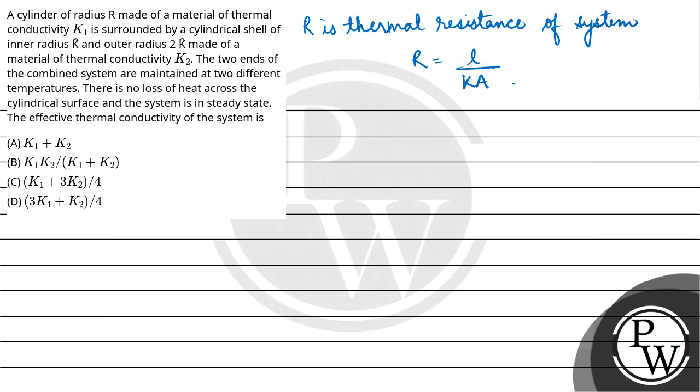Using the relation 1 upon R is equal to 1 upon R1 plus 1 upon R2, we get 1 upon L upon KA is equal to 1 upon L1 upon K1 A1 plus 1 upon L2 upon K2 A2. This gives KA upon L is equal to K1 A1 upon L1 plus K2 A2 upon L2. So KA is equal to K1 A1 plus K2 A2.